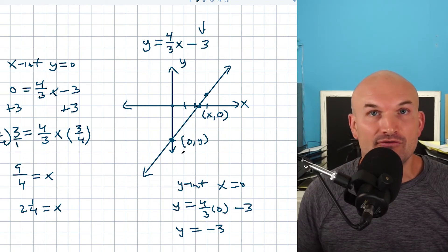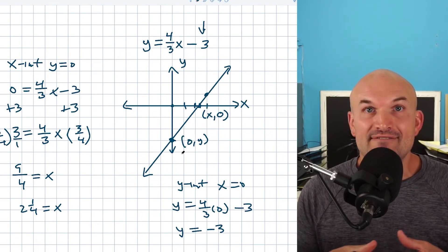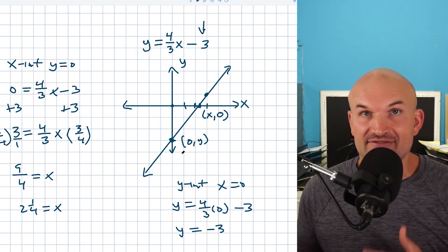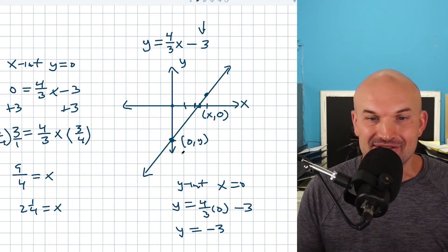But the important thing about this, guys, it doesn't matter what form, point slope form, standard form, whenever you're trying to find the x and the y intercepts of a linear equation, just go and plug zero in for y to find the x-intercept and plug zero in for x to find the y-intercept.